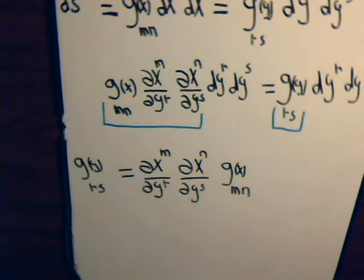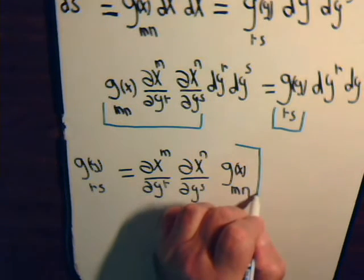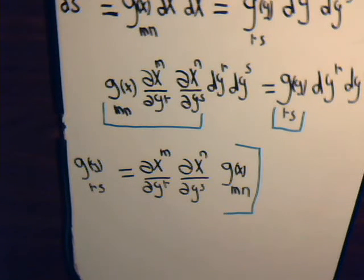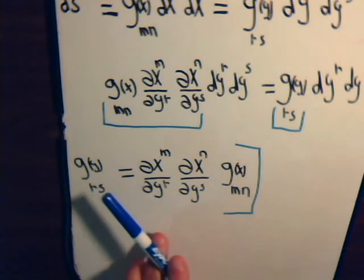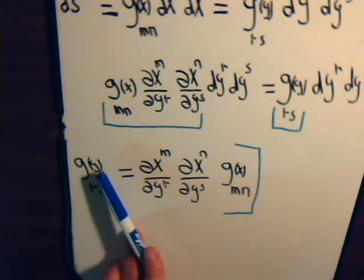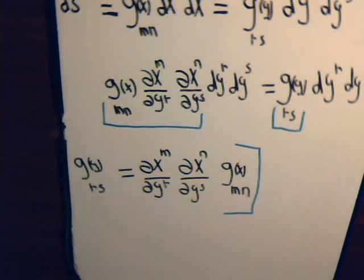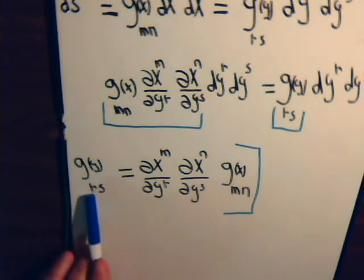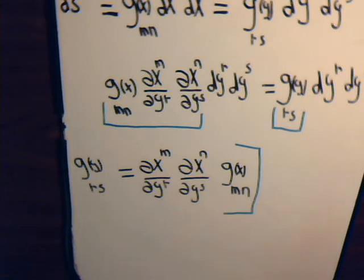And indeed, if you go back in the earlier videos, I think particularly in video number five, we discussed the transformation patterns of contravariant and covariant vectors and tensors. This is the general pattern for covariant transformation. And in fact, the sort of mnemonic device for remembering covariant transformation is, well, here, we're going to be taking partial derivatives with respect to y.